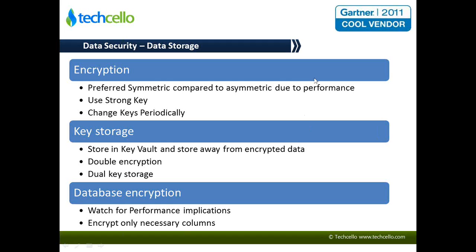The first question: in multi-tenancy, even a single patch is going to affect all customers. Would it be more effort? A single bug fix is actually easier — you just fix it once and deploy it instead of doing it for every single customer, which is a big pain. Improving software quality and avoiding bugs is a totally different issue altogether and cannot be a reason not to choose multi-tenancy.